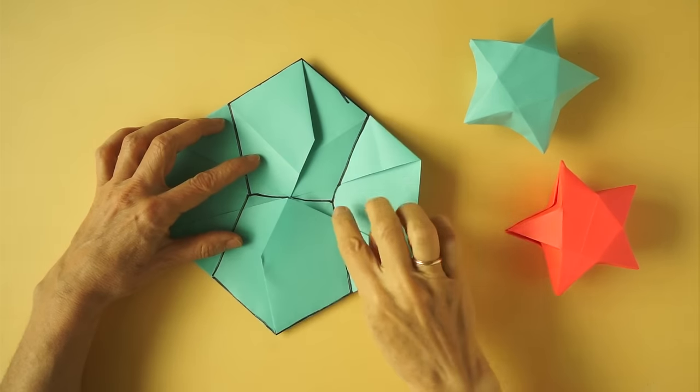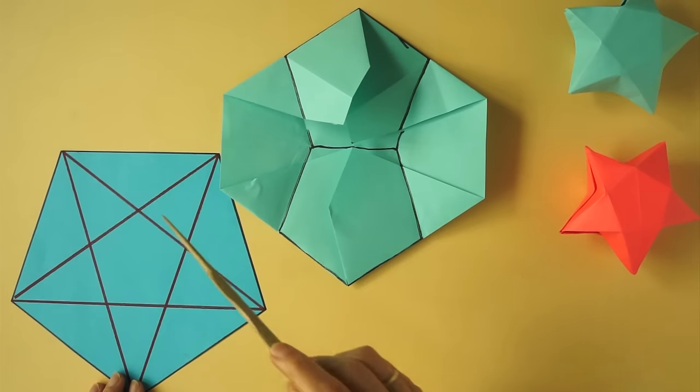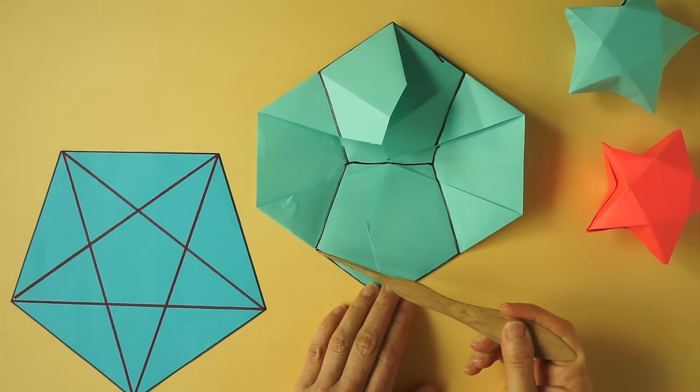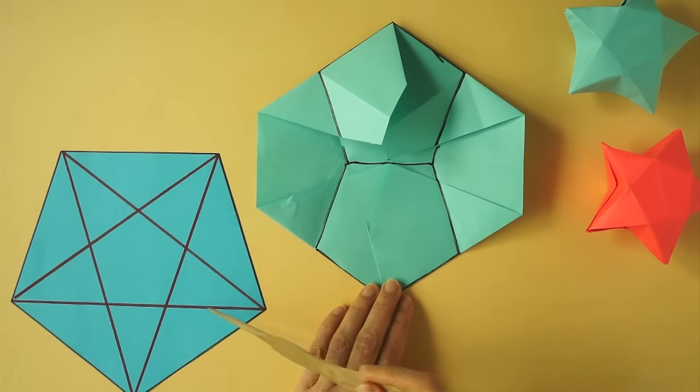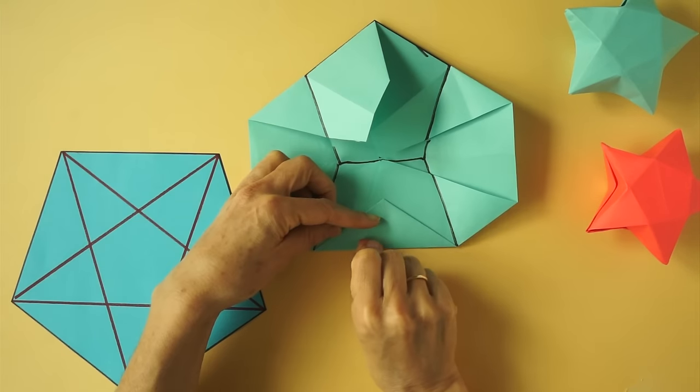I highlighted the two pentagons in black. We are going to make folds connecting the corners and we end up with a star shape. We fold through the layers and connect these two corners. Make a sharp crease.